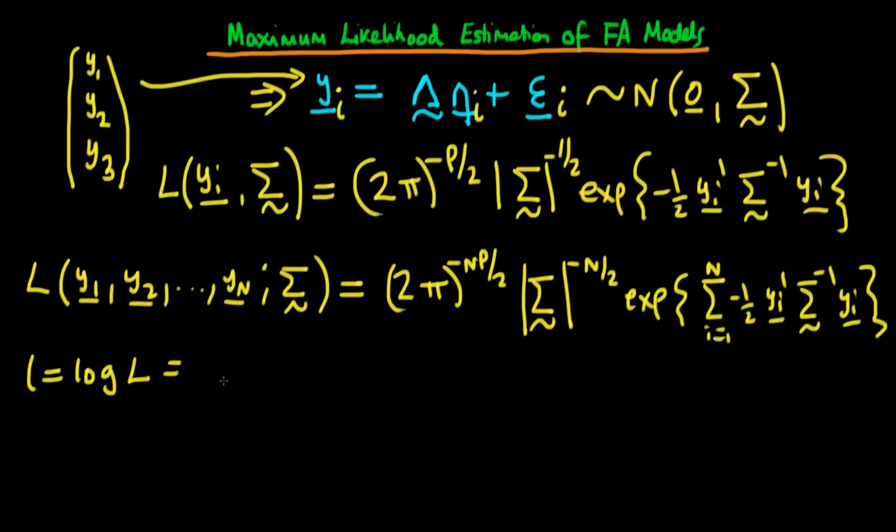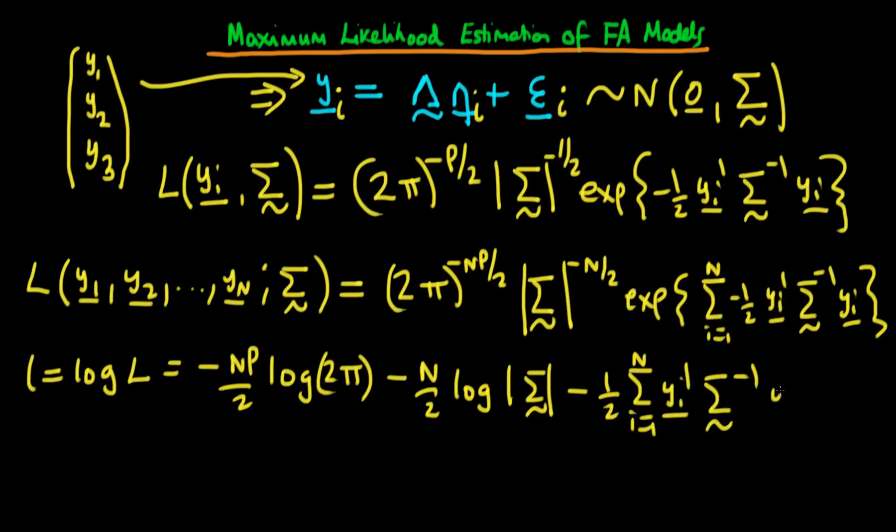So we're going to take the log of the likelihood. If we do that, we find that this is equal to minus Np over 2 times the log of 2π, where I'm using log to denote the natural log, and then minus N over 2 times the log of the determinant of sigma. And then when we take the log of an exponent, it just gets rid of the exponent. So we finally get minus 1 half times the sum from i equals 1 to N of y_i transposed times the inverse of sigma times y_i. So that's the log likelihood, and it's this expression which we're going to work on in the next video.